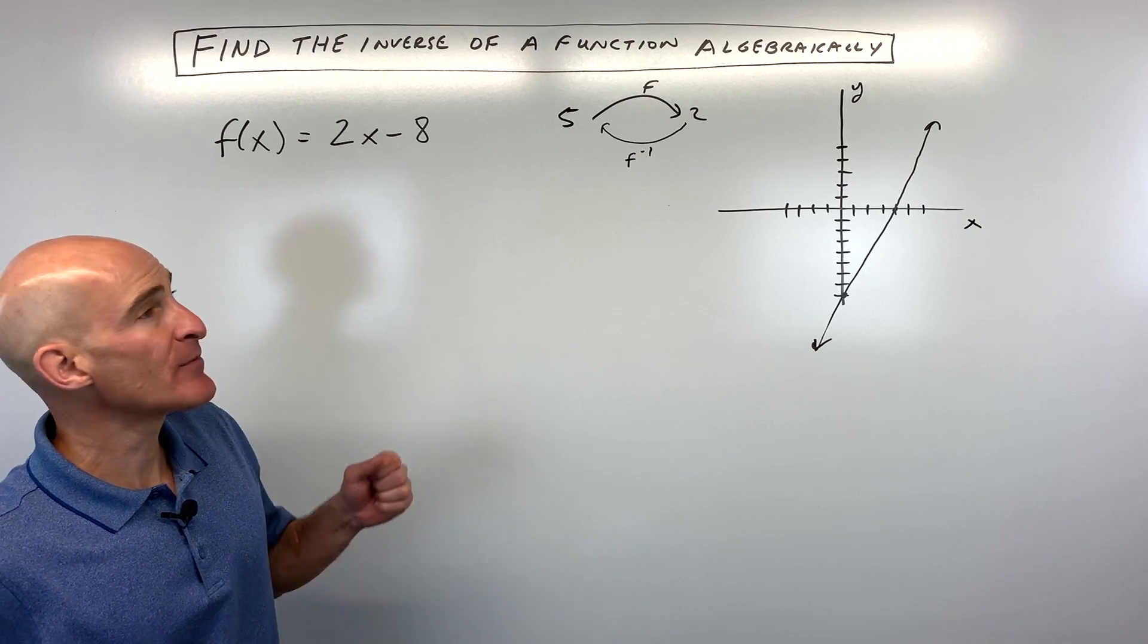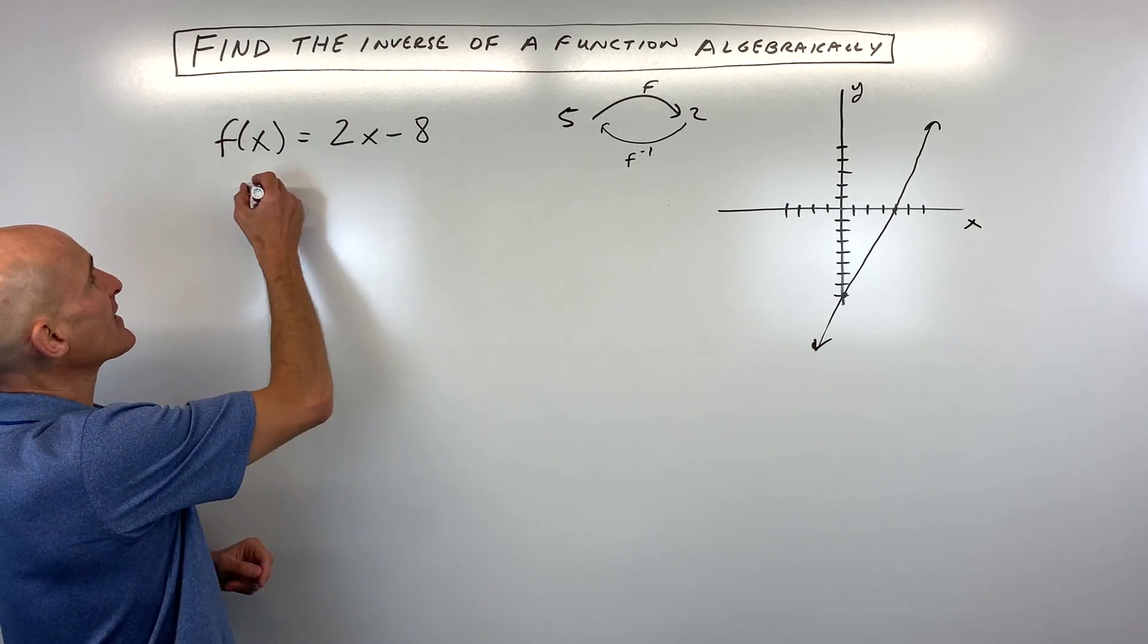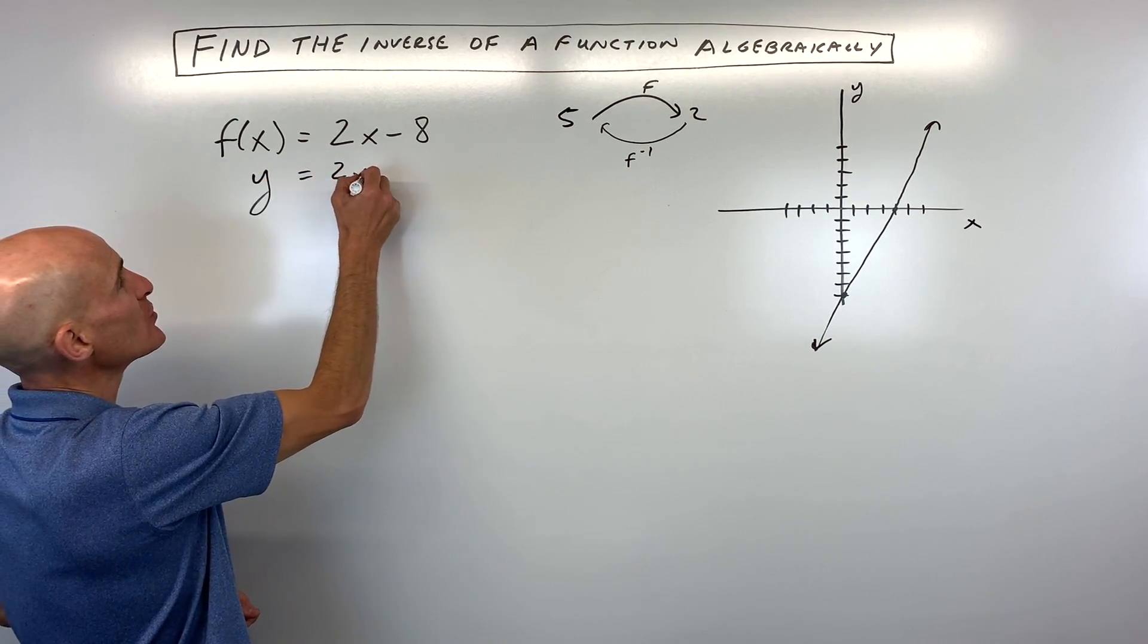So how do we do this? Well, the first step you want to do is replace f of x with y. So we can think of this as y equals 2x minus 8.